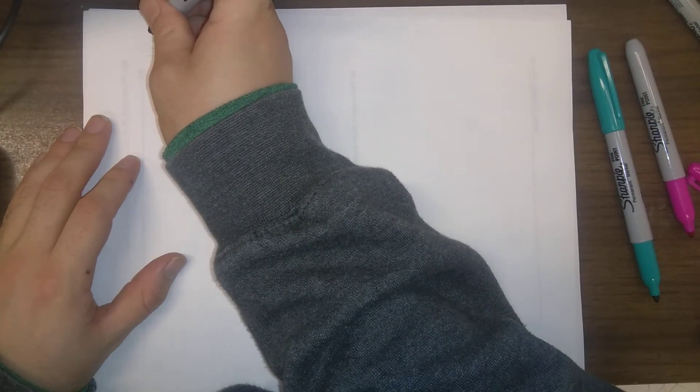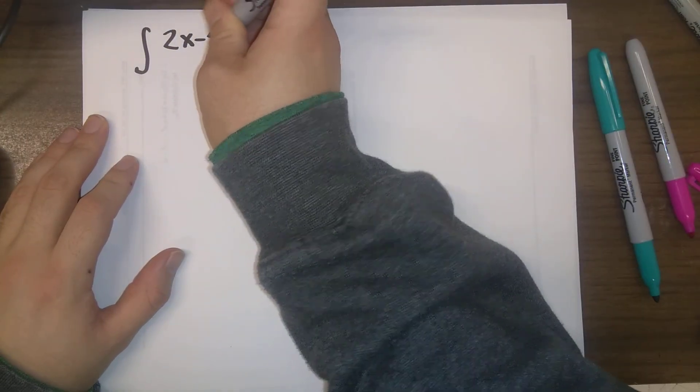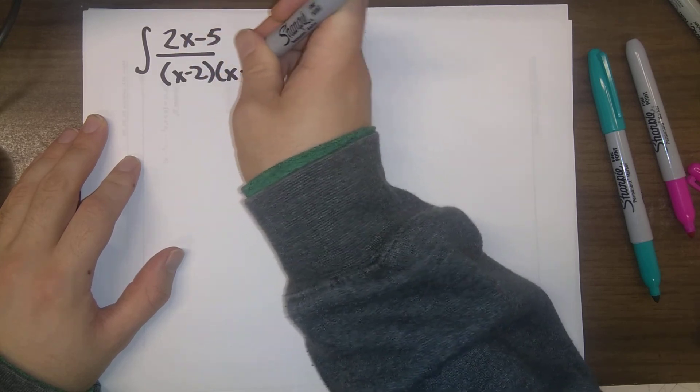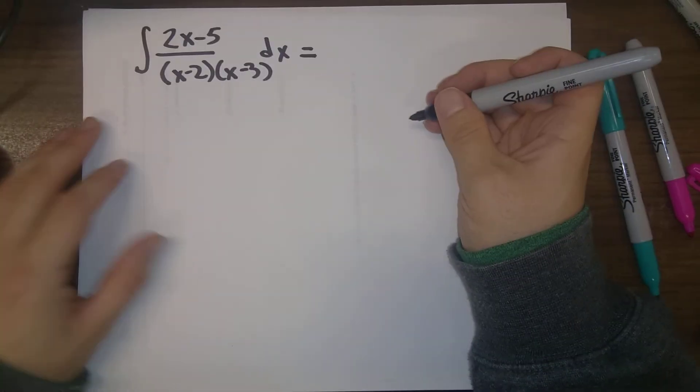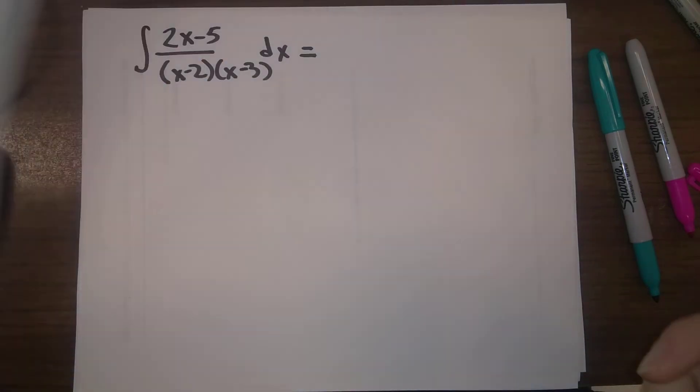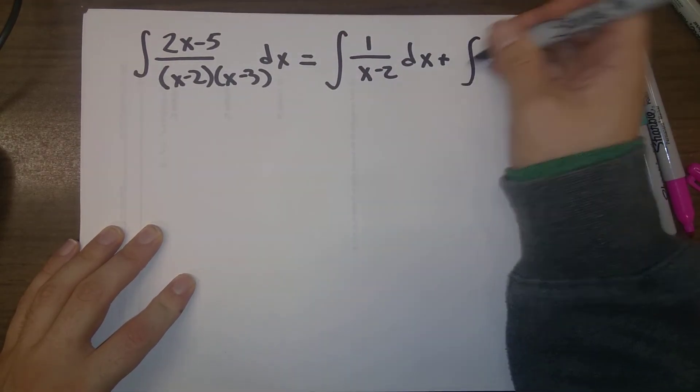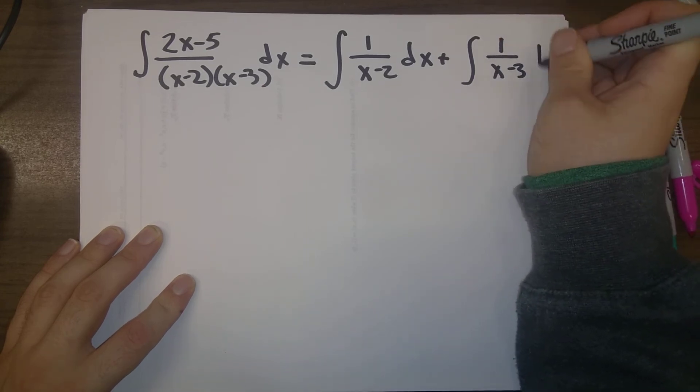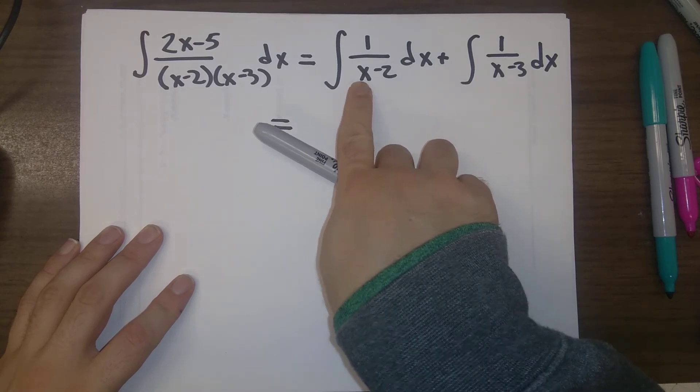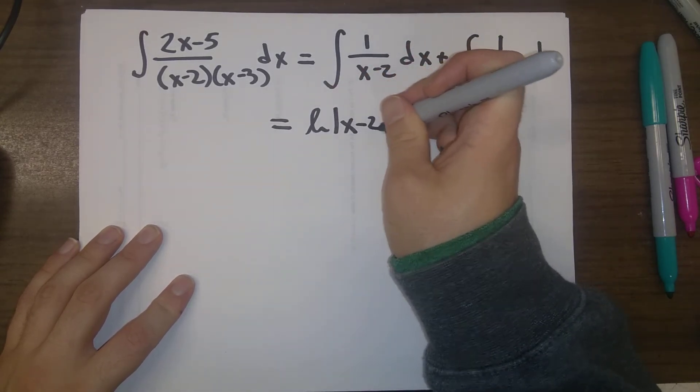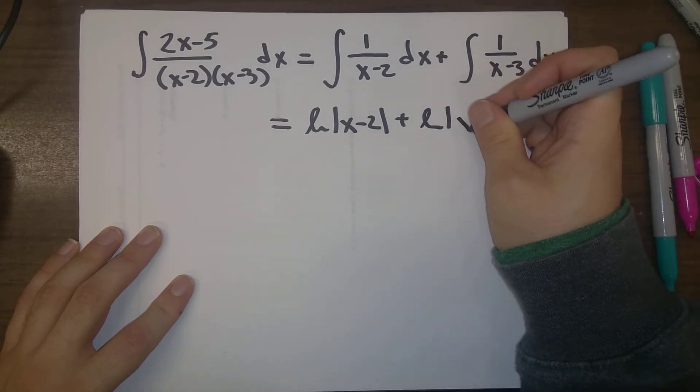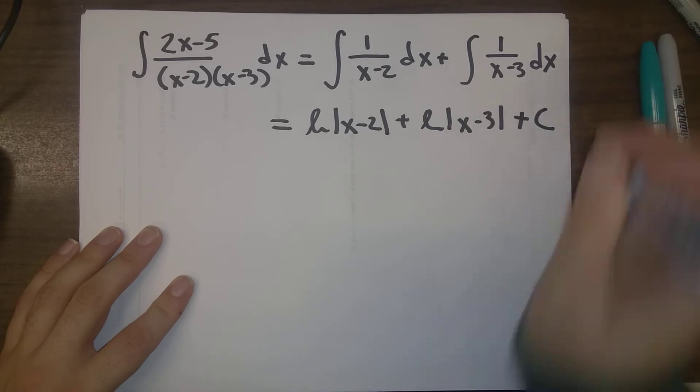Because now, we are very close to the end. So, 2x minus 5 over x minus 2 times x minus 3 dx. This is the integral of 1 over x minus 2 plus the integral of 1 over x minus 3. And we know that this integral is natural log of x minus 2. And this integral is natural log of x minus 3. And don't forget about our constant.